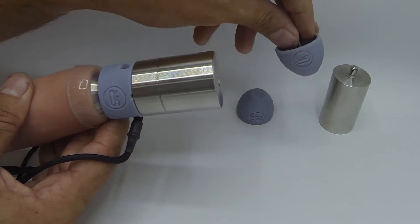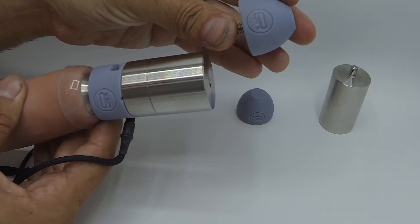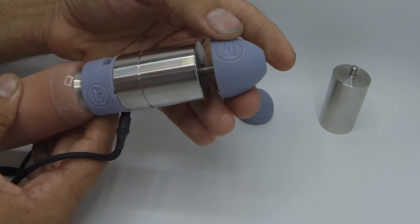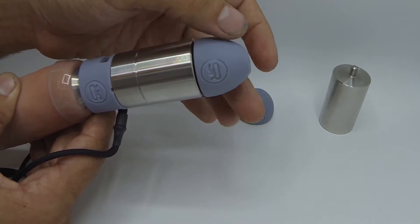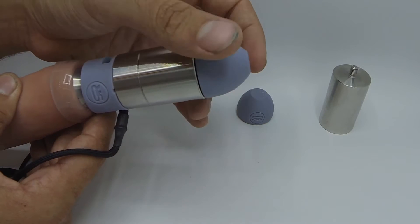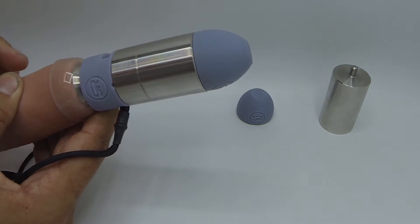Now we're going to take our weight bulge and screw that into the end of the last weight in our weight set. Now we have our full assembly installed.